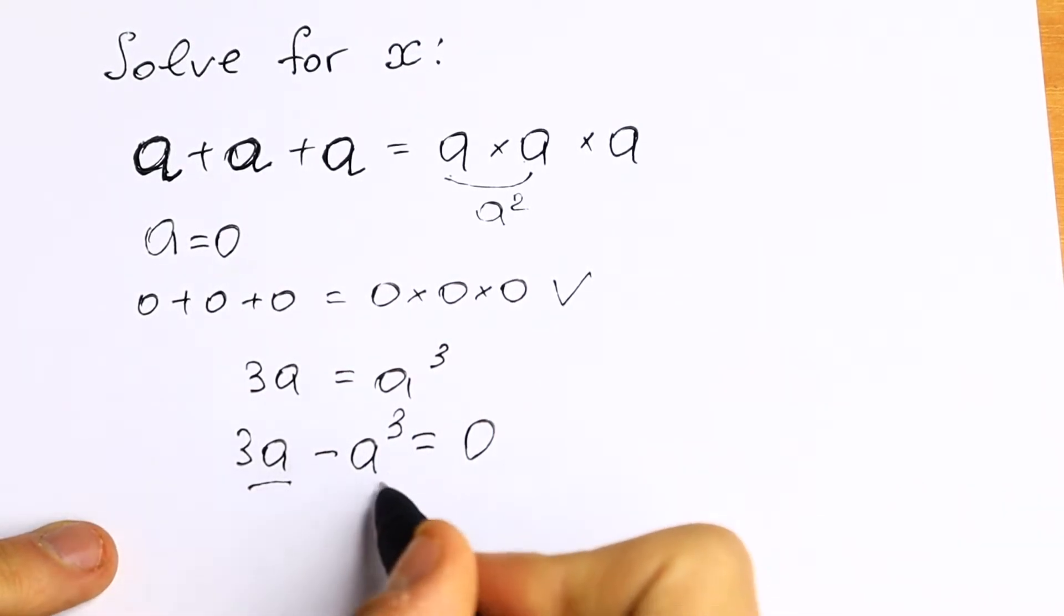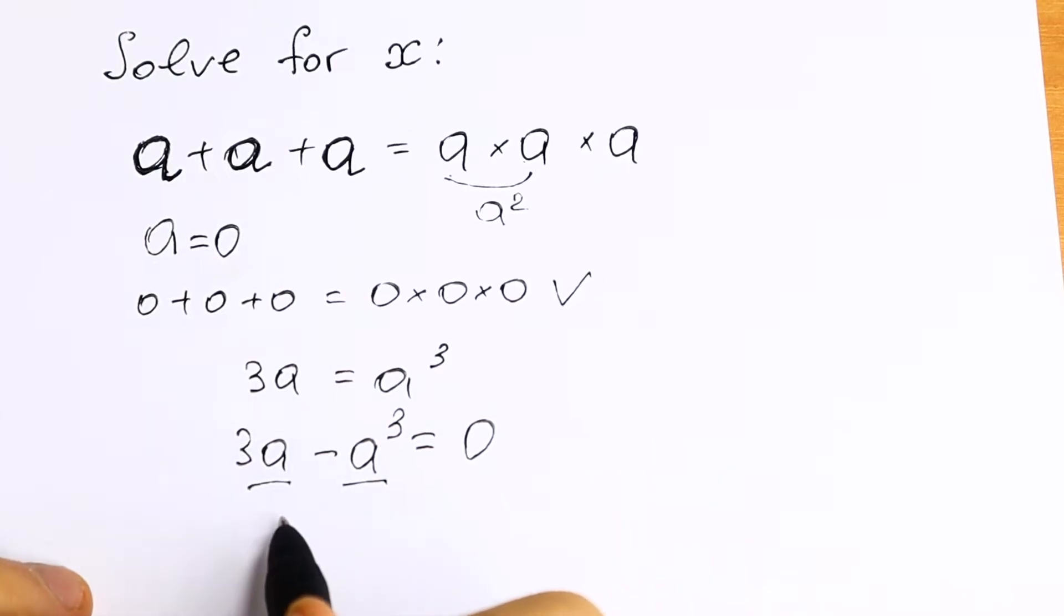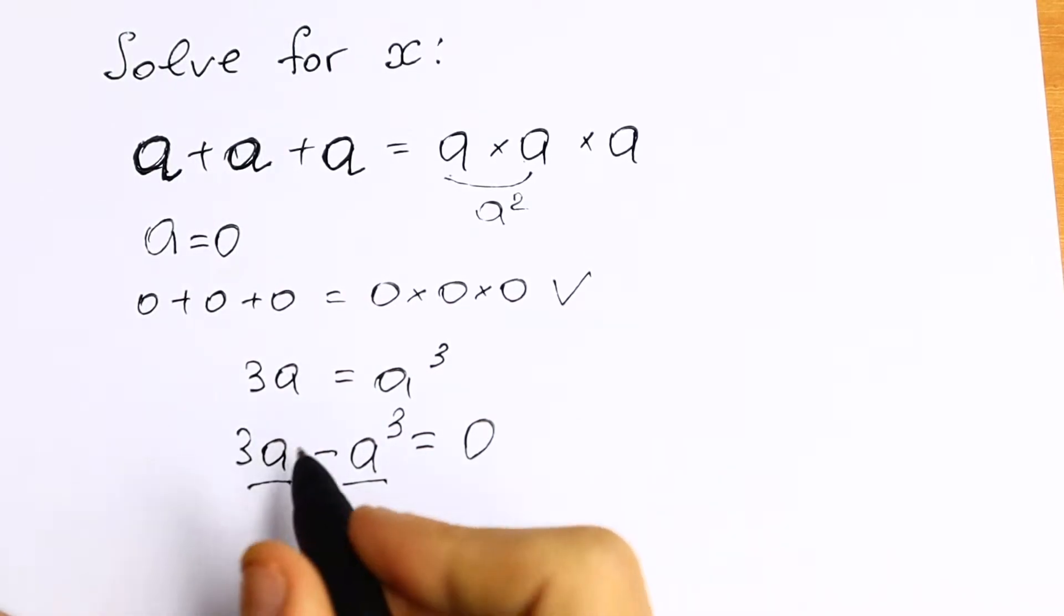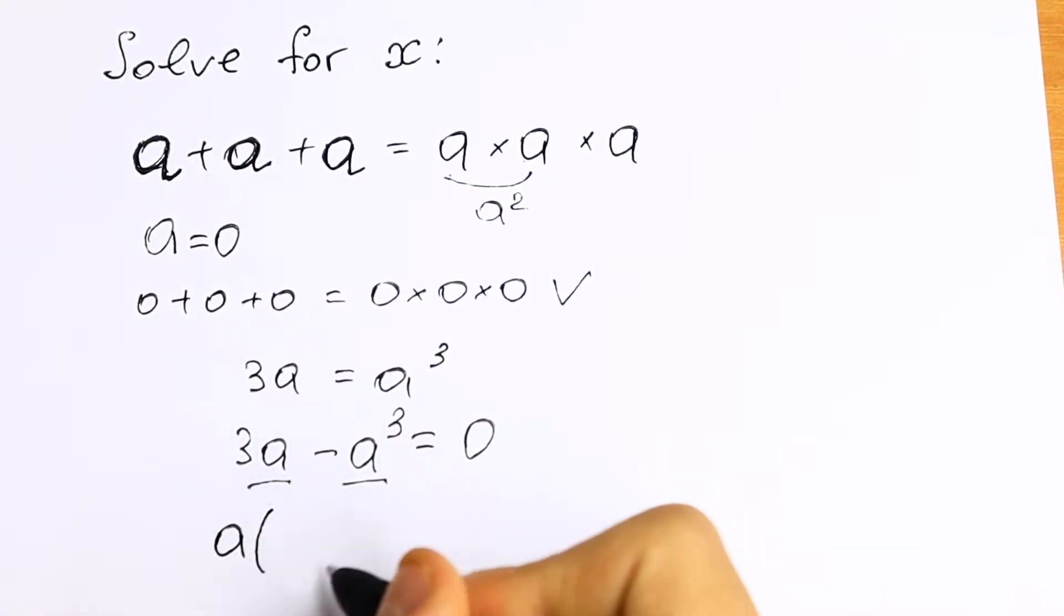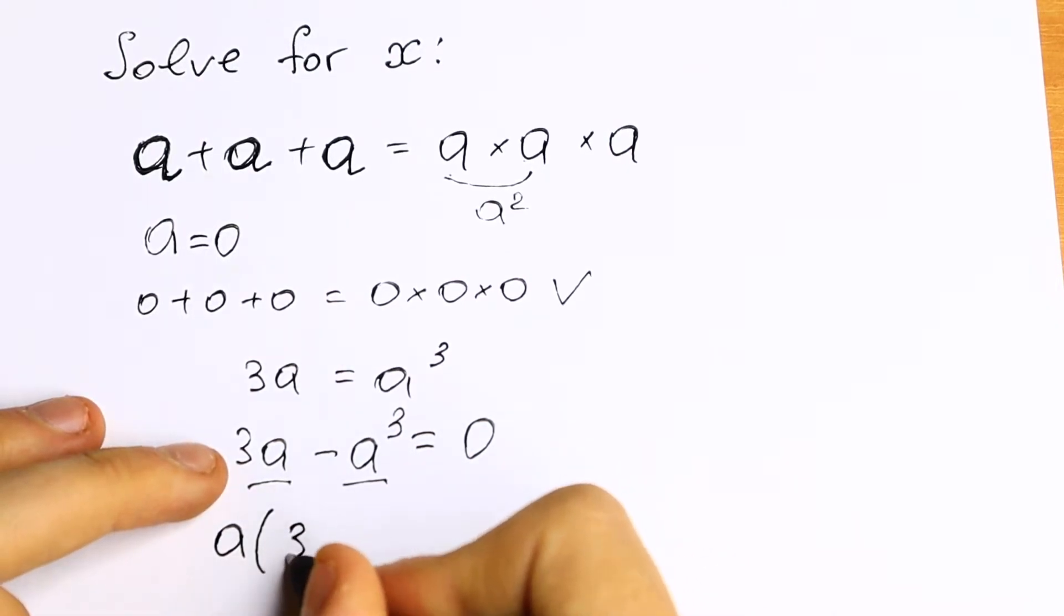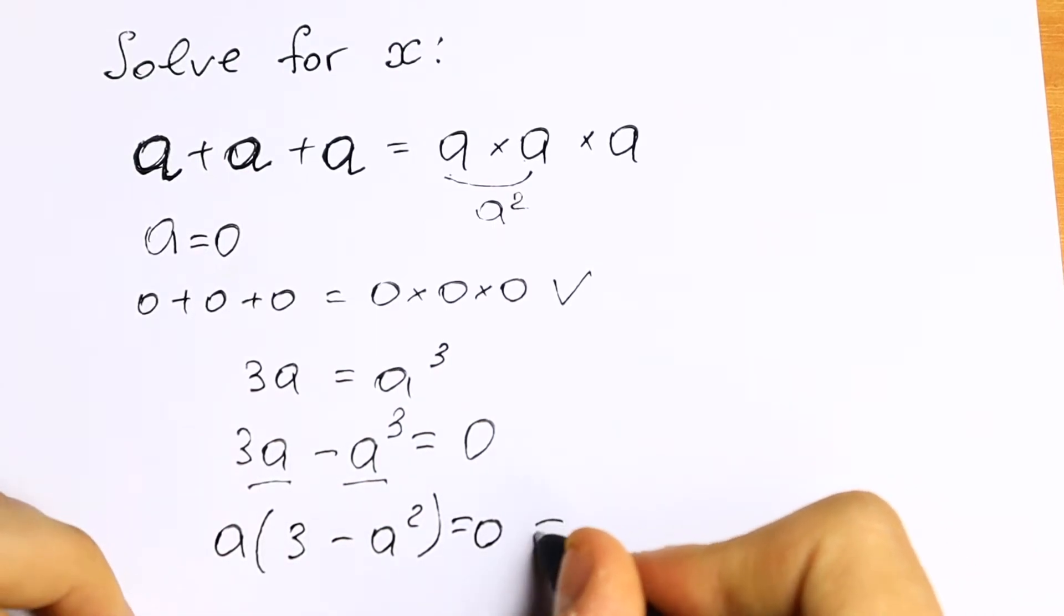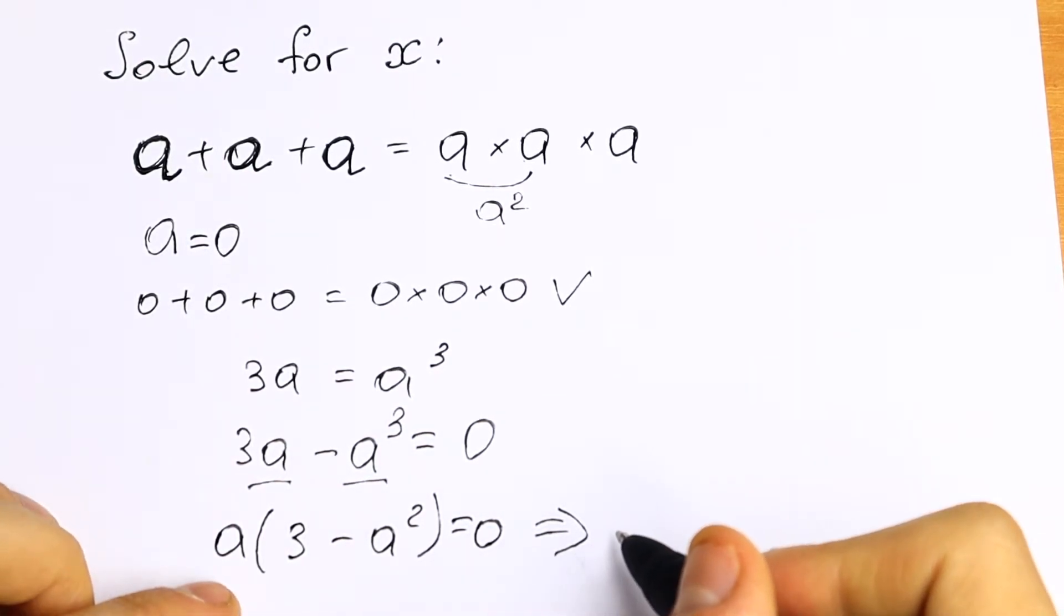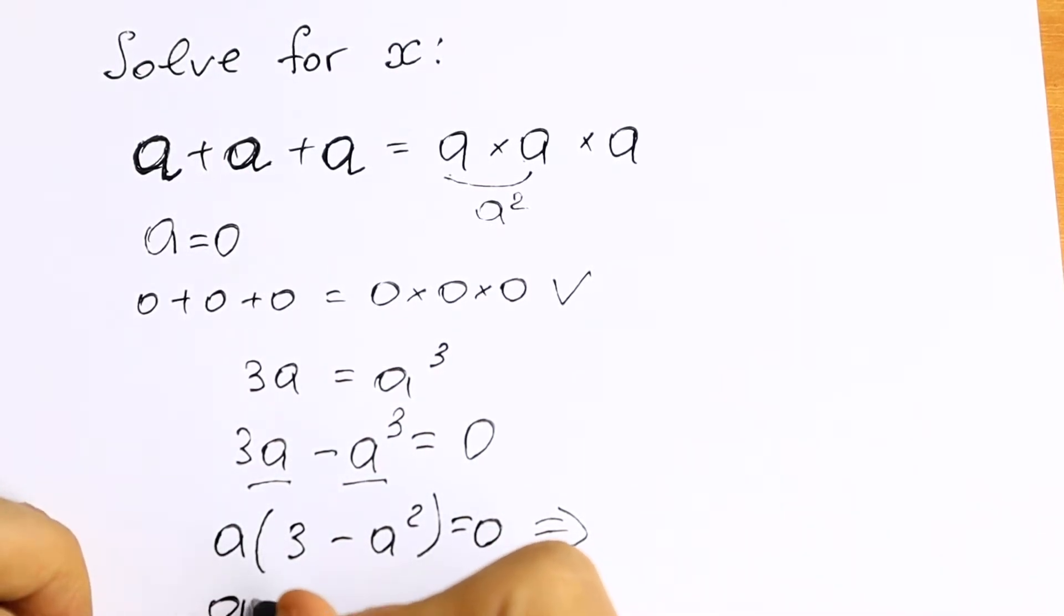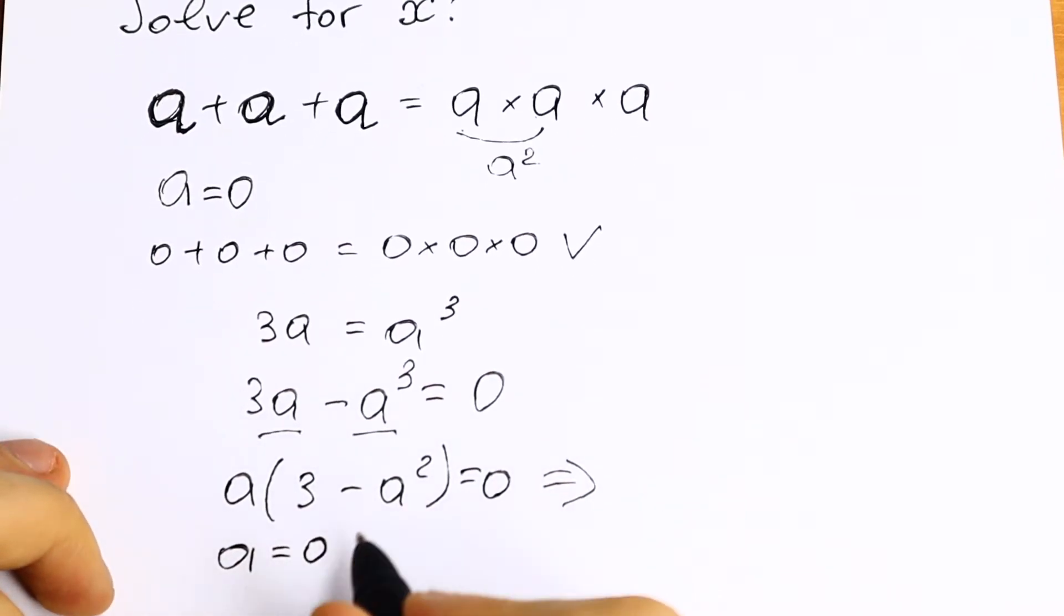Right here we have a and right here we have a cubed. So we can factor out a as a common factor. We will have a and in parentheses we will have 3 minus a squared equal to 0. And as you can see we have a product equal to 0. So this a equal to 0. This is our first root.